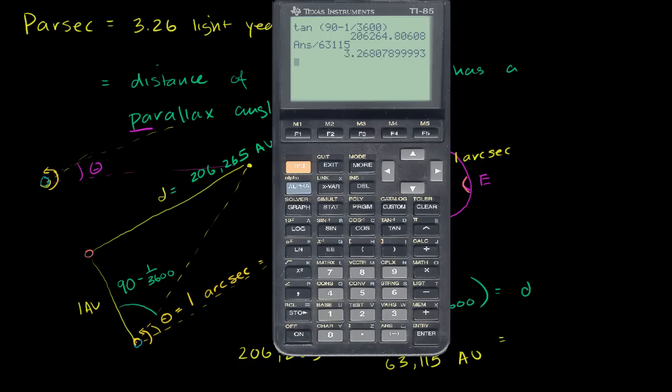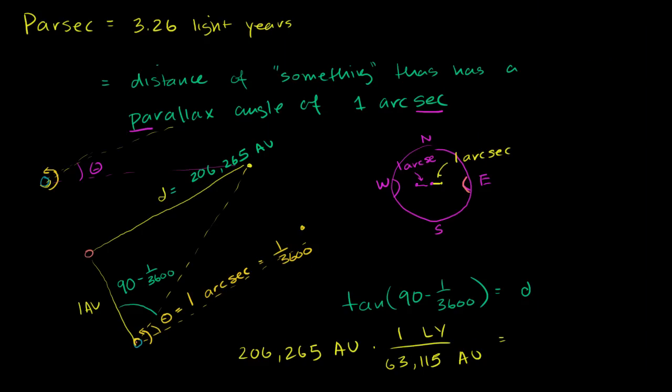We get 3.2, well the way the math worked out here, it rounded to 3.27 light years. So this is equal to roughly 3.27 light years.